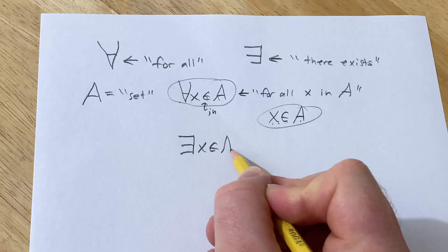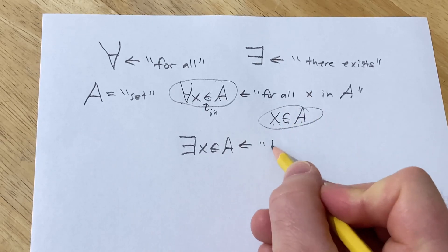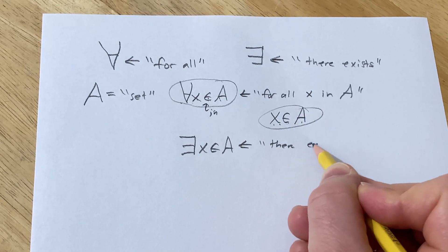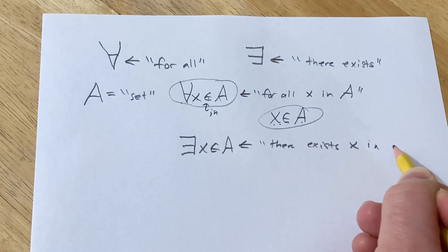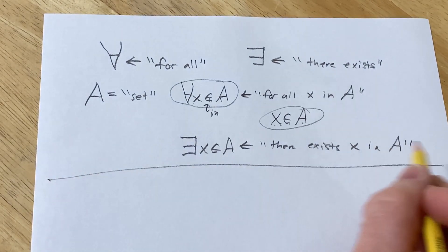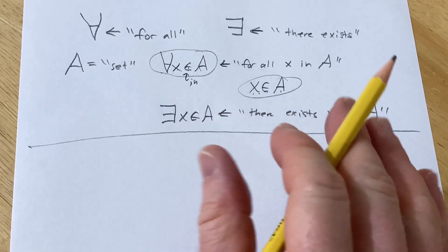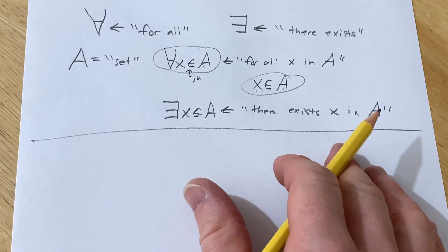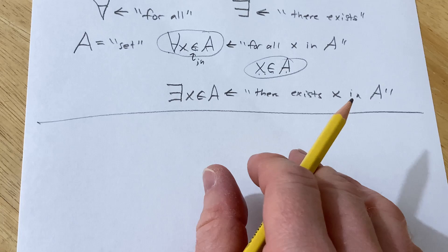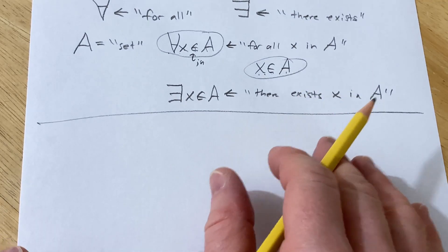And then if someone does this, this means there exists X in A. Okay. So there's a bunch more logic you actually need to fully understand this. So I'm just going to jump into it now and do my best to explain. And hopefully it makes sense.